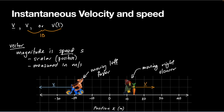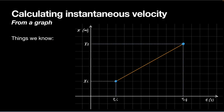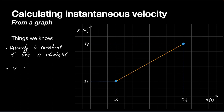Let's look at how we might actually measure the instantaneous velocity of something. What we know so far is that if we've got a position-time graph, the velocity is constant if it's a straight line. The velocity equals delta x over delta t, or rise over run. That velocity is the same at all points along the line, and that's what we know so far about how velocities work.